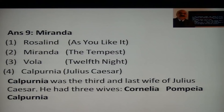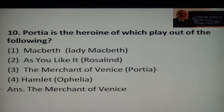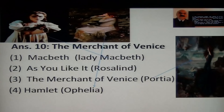Question 10: Portia is the heroine of which play — Macbeth, As You Like It, The Merchant of Venice, or Hamlet? The answer is The Merchant of Venice. You can see a photo of Lady Macbeth rubbing her hands — she had a hand in killing King Duncan by provoking and inciting her husband Macbeth. The play Macbeth is about vaulting ambition — it is the tragedy of vaulting ambition.